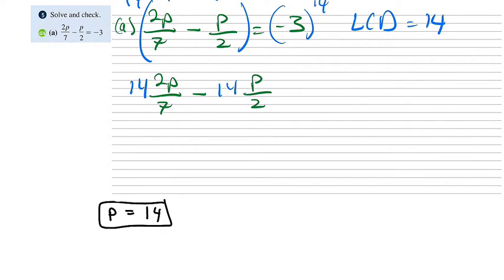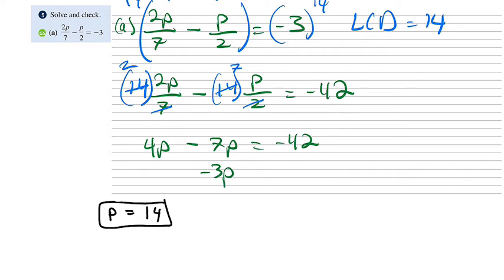And then 3 times 14 is 30 plus 12, is a negative 42 here. So now if we have 14 divided by 7, the 7 turns the 14 into a 2. 14 divided by 2 is 7. So now we have 2 times 2 is 4p minus 7p equals a negative 42. 4 plus a negative 7 is negative 3p equals a negative 42. Then divide both sides by negative 3 and we get p equals 14.